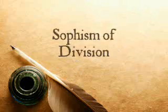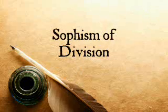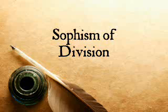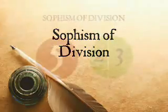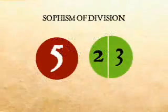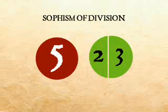The sophism of division is the opposite — when what is true in a compound sense is wrongly assumed to be true in the divided sense. For example, five is one number. The divided sense is two and three. Two and three are not one number, even though five is one number.